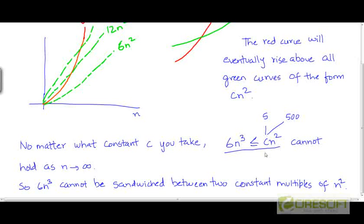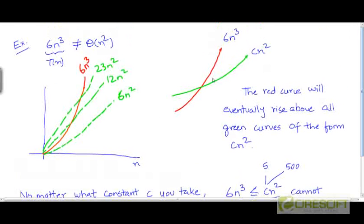As we increase the value of c, the intersection point between the red curve and the green curve is going to shift more and more to the right. But there will exist an intersection point beyond which the red curve will permanently rise above the green curve.